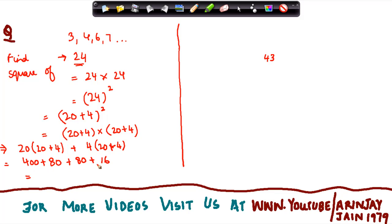Now I can easily do a sum of all these four numbers. This gives me 576, so the square of 24 is 576.